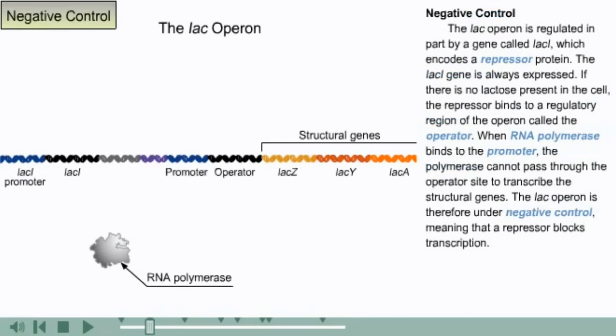The lac operon is regulated in part by a gene called lacI, which encodes a repressor protein. The lacI gene is always expressed. If there is no lactose present in the cell, the repressor binds to a regulatory region of the operon called the operator. When RNA polymerase binds to the promoter, the polymerase cannot pass through the operator site to transcribe the structural genes. The lac operon is therefore under negative control, meaning that a repressor blocks transcription.